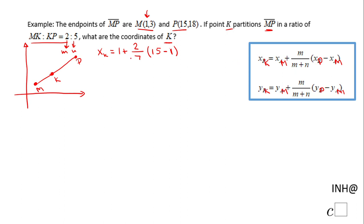Now we're going to simplify. We have 1 plus 2/7 times (15 minus 1 is 14). Here you may want to look for simplification—7 goes into 14 two times, so my next step will be to do 2 times 2, and that is 4. We end up with XK equal to 5. So remember, the partition point is K, not M, and that's it for the x-coordinate of point K in this problem.